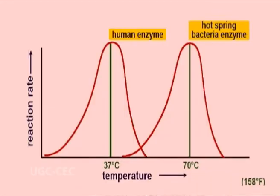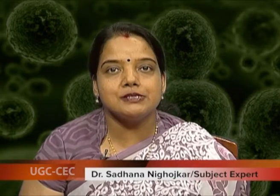Different enzymes have different optimum temperatures. In general, human enzymes have a temperature optimum of 37°C, while bacteria growing in hot springs have an optimum temperature of 70°C. Temperature affects the stability of the enzyme, affinity of the inhibitor for the enzyme protein, pH, and the actual velocity of breakdown of the enzyme-substrate complex. The energy of activation of the enzyme can also be determined from data on the effect of temperature on enzyme activity.